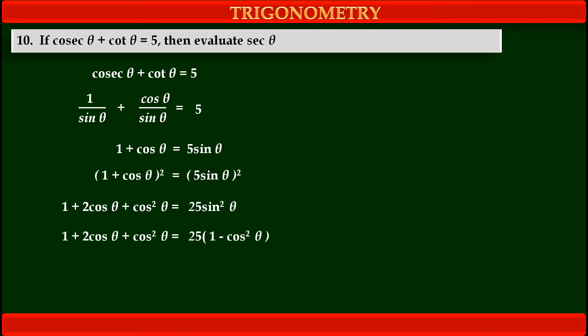Since we have to find sec θ, that means cos θ, we have to convert this equation in terms of cos θ only. So on the right-hand side, we change sin² θ as 1 minus cos² θ. So we get 1 plus 2 cos θ plus cos² θ is equal to 25 into (1 minus cos² θ). Solving the bracket, we get 1 plus 2 cos θ plus cos² θ is equal to 25 minus 25 cos² θ.